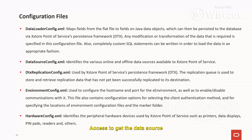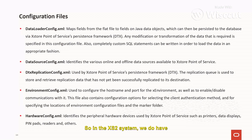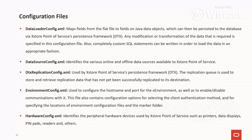The DTX_replication_config.xml file is used by the Access Store Point of Service persistence framework. The replication queue stores and retrieves replication data that has not yet been successfully replicated to its destination. You can see how the replication works, including what data is being replicated from the store to the Accenter and what exclusions have been configured.